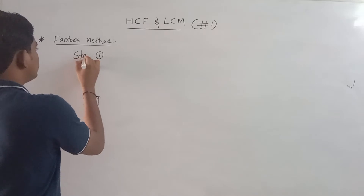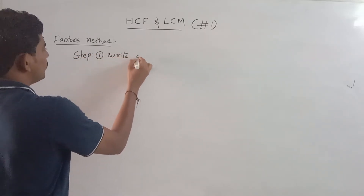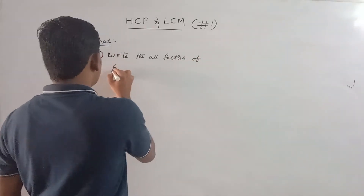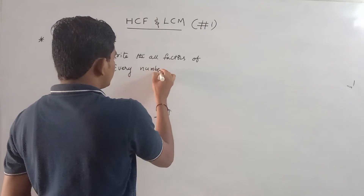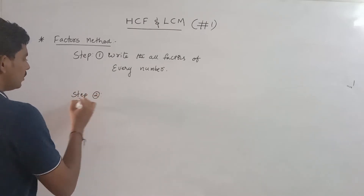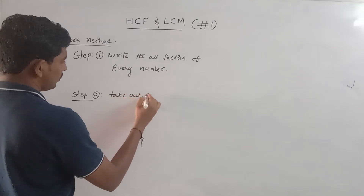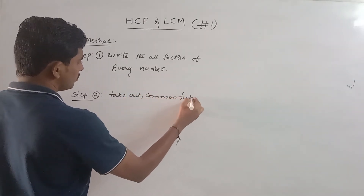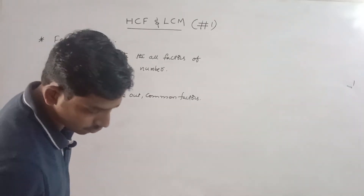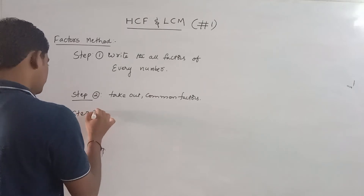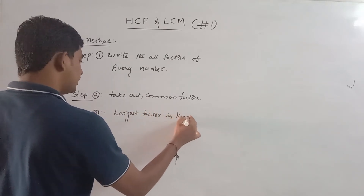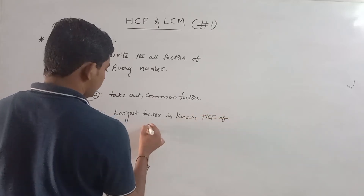For a number like 20, Step 1: list all the factors. Step 2: take out the common factors. The largest of the common factors is known as the HCF of the given numbers.